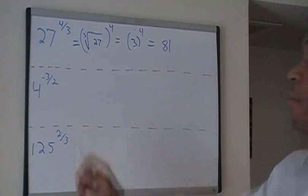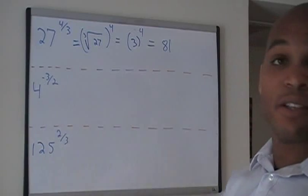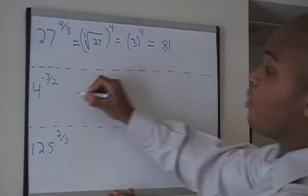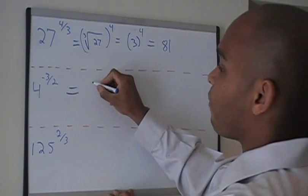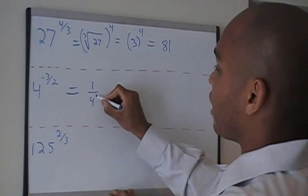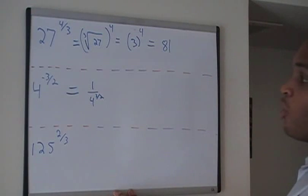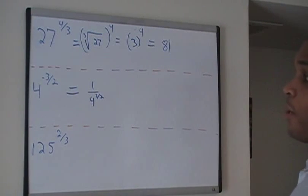Next we have 4 to the negative 3 halves. So we have to take care of this negative exponent. We'll take the reciprocal of our base which is 4 so 1 over 4 is the reciprocal of 4 and then we make the exponent positive. So I'm left with 1 over 4 raised to the 3 halves.